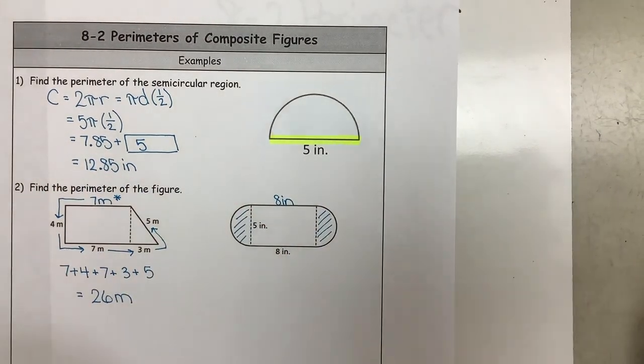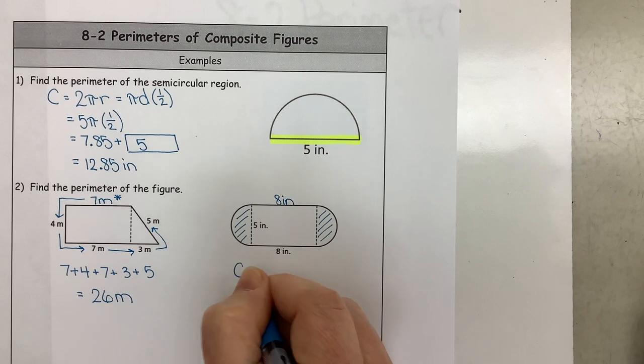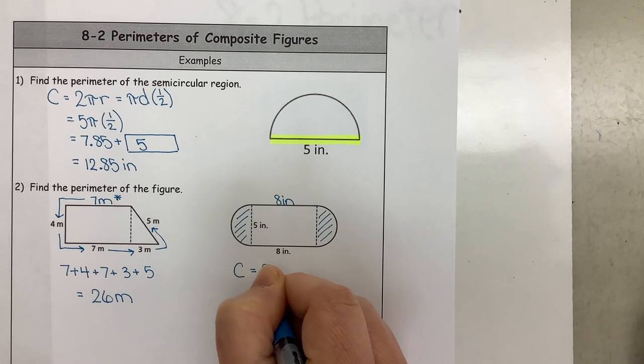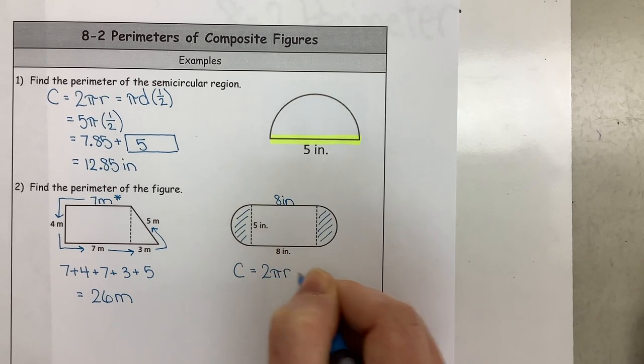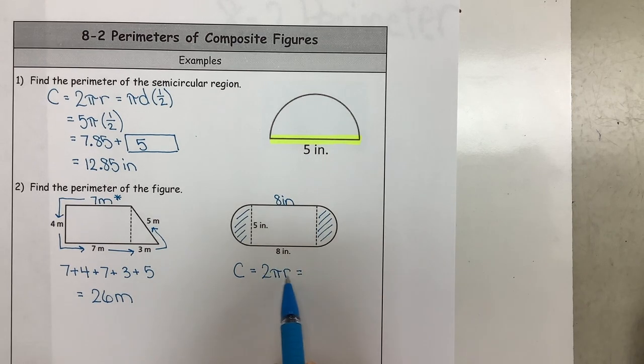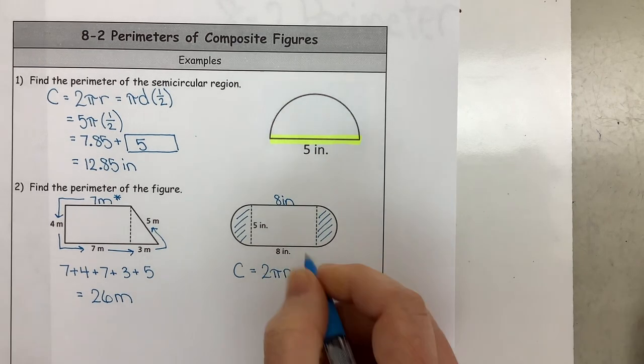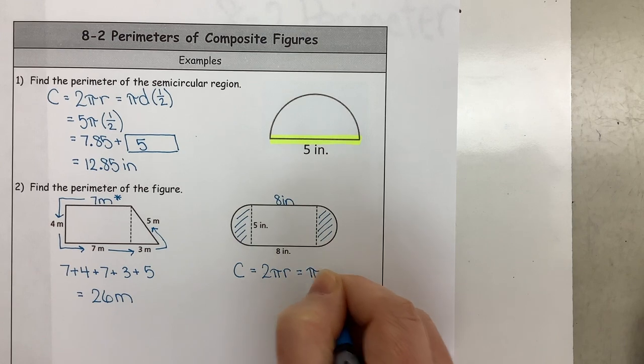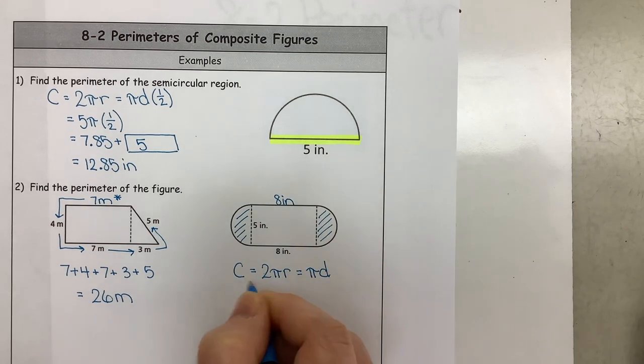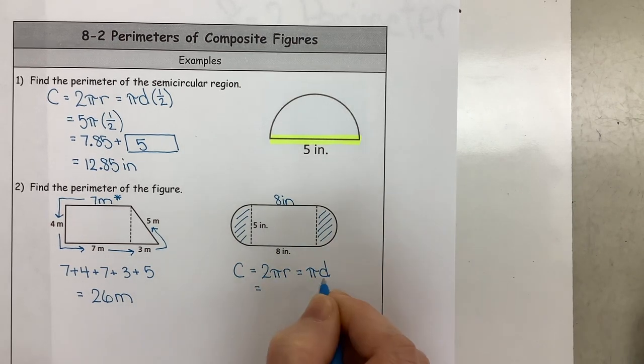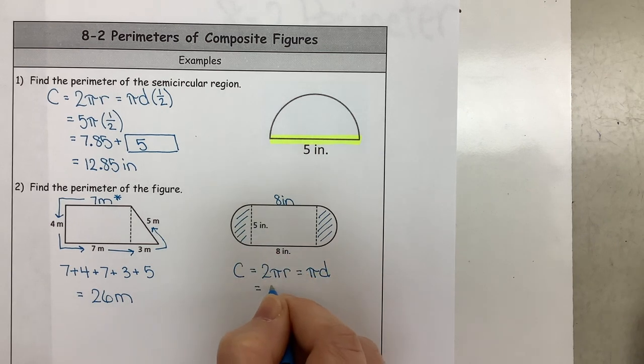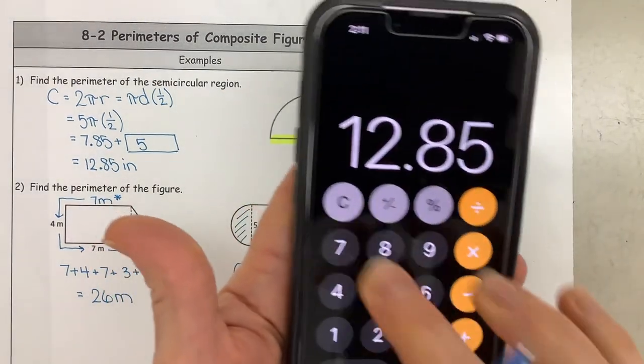So what we can do is we can use circumference equals 2πr, but since I have two radiuses I know that is one diameter. So I'm going to go ahead and do that. Our diameter is 5 and we still have the π.